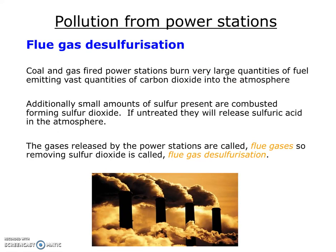Pollution from power stations. Some fossil fuels, particularly coal, have a lot of sulfur-containing compounds trapped inside. Whilst sulfur is less than 0.1% of the mass of a lump of coal, because of the vast quantity of coal being burned, the actual amount of sulfur accumulates and builds up. The issue is that sulfur will combust in oxygen to form sulfur dioxide, and if untreated it will react with water and oxygen in the atmosphere to form sulfuric acid.